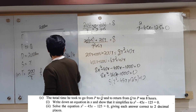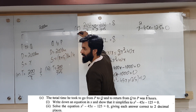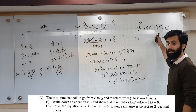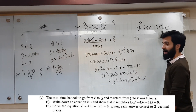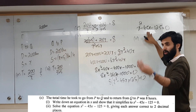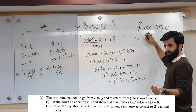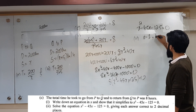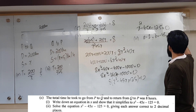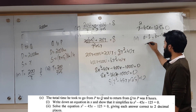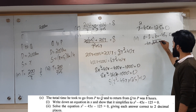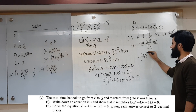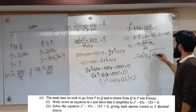This was part C part 1. Now let's do part C part 2: you have to solve the quadratic equation x squared minus 45x minus 125 equals 0 using the quadratic formula. A equals 1, B equals minus 45, C equals minus 125. The quadratic formula gives: minus bracket minus 45, plus or minus square root of minus 45 squared minus 4 times 1 times minus 125, over 2 times 1.